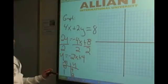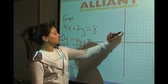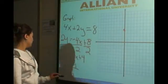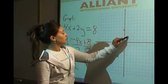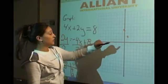x is 0, y is positive 4, 1, 2, 3, 4. We have a point there. And if x is 1, y is 2. Let's go over 1, up 2. We only need 2 points to make a line.